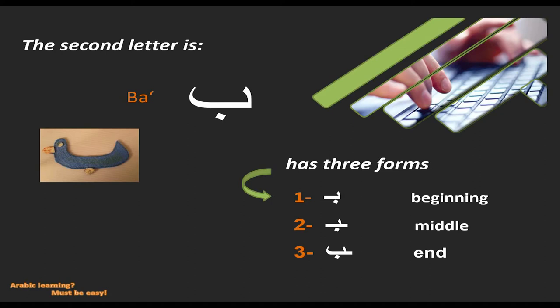So as we learned in the last video, the letters have different forms. The letter Ba has three forms: as it's written at the beginning of the word, or in the middle of the word, or at the end of the word.